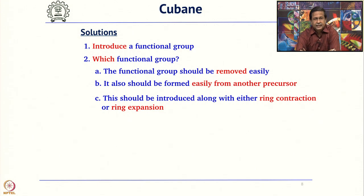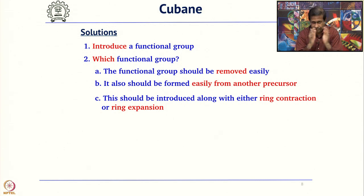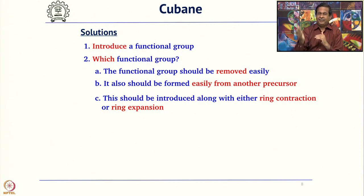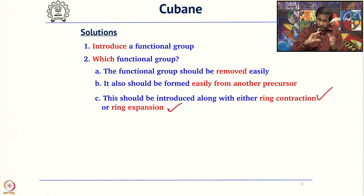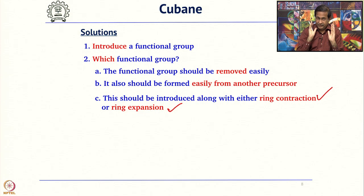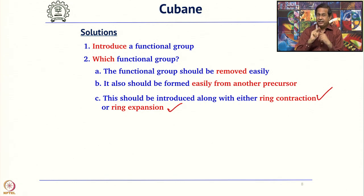One way to think about it is: you are going to make a four-membered ring — can you make it via ring contraction or ring expansion? And during the process, you should also introduce a functional group. You are thinking about ring contraction or ring expansion, and when you do this reaction, you also introduce a functional group — it is two in one.